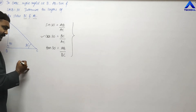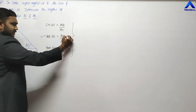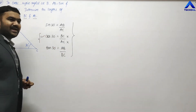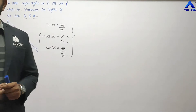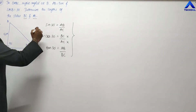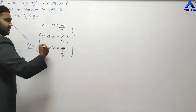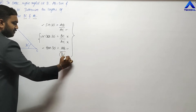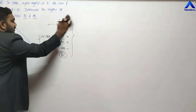If I apply cos 30, the ratio is BC upon AC — adjacent divided by hypotenuse. We don't have BC or AC, so we cannot apply cos 30 as that leads us nowhere. We need values, not just a relation between BC and AC. So we will apply sin 30, since AB is given and we can find AC; or apply tan 30 to find BC directly.